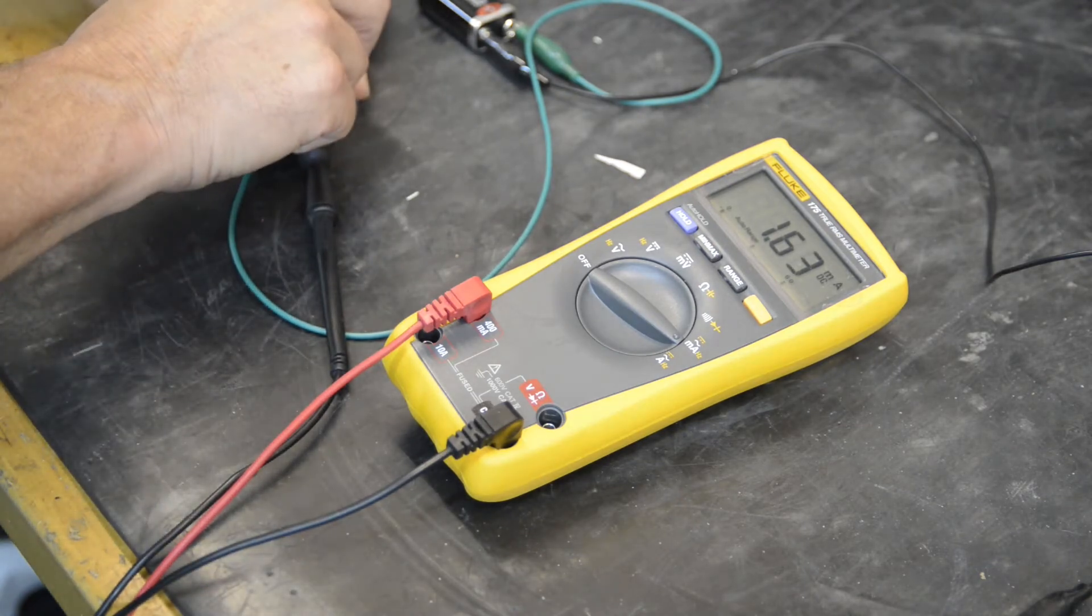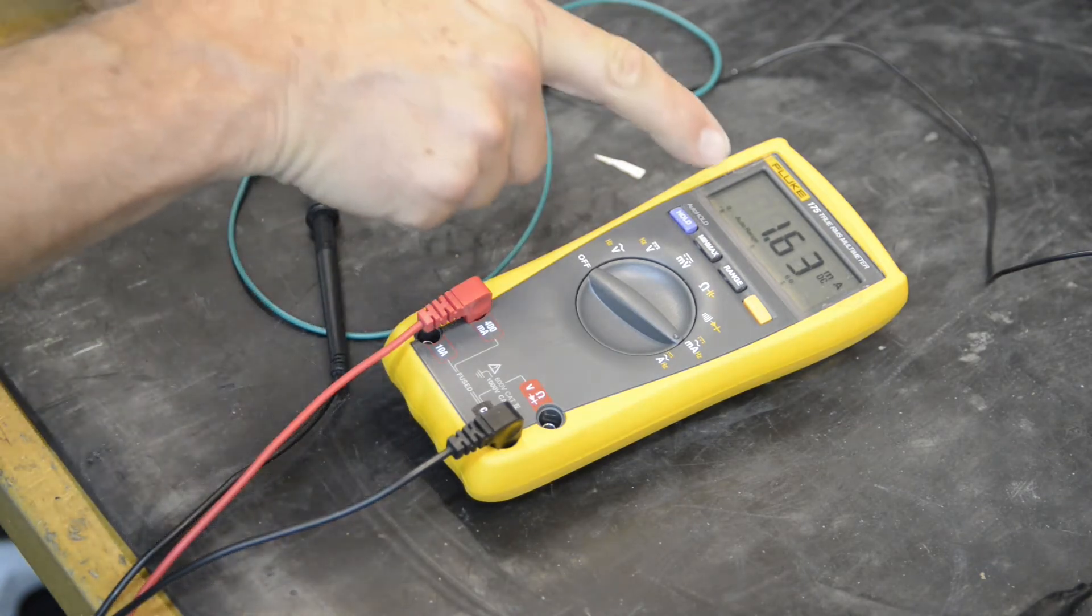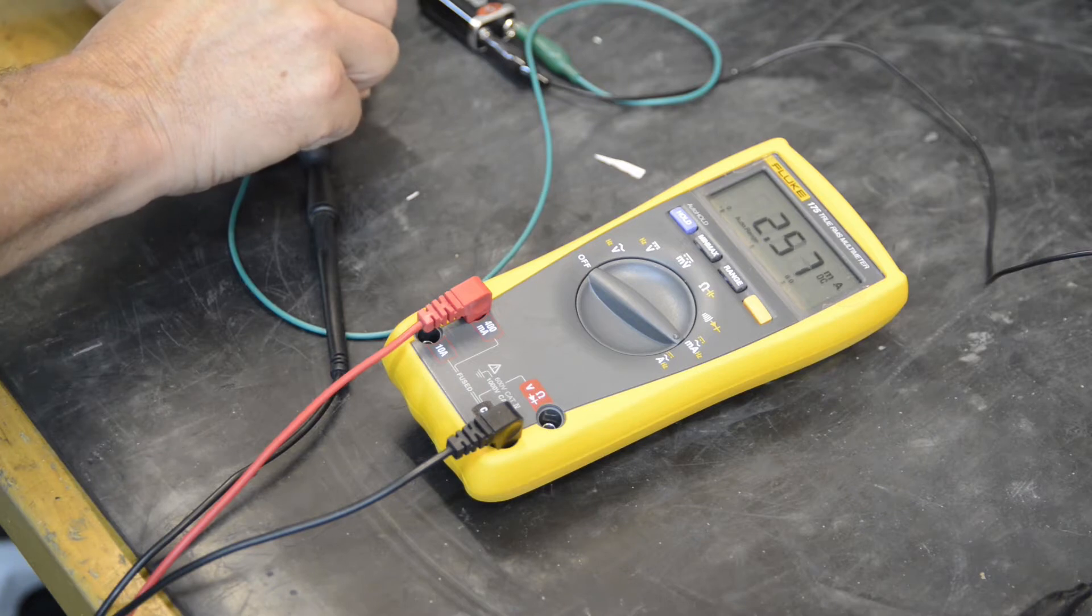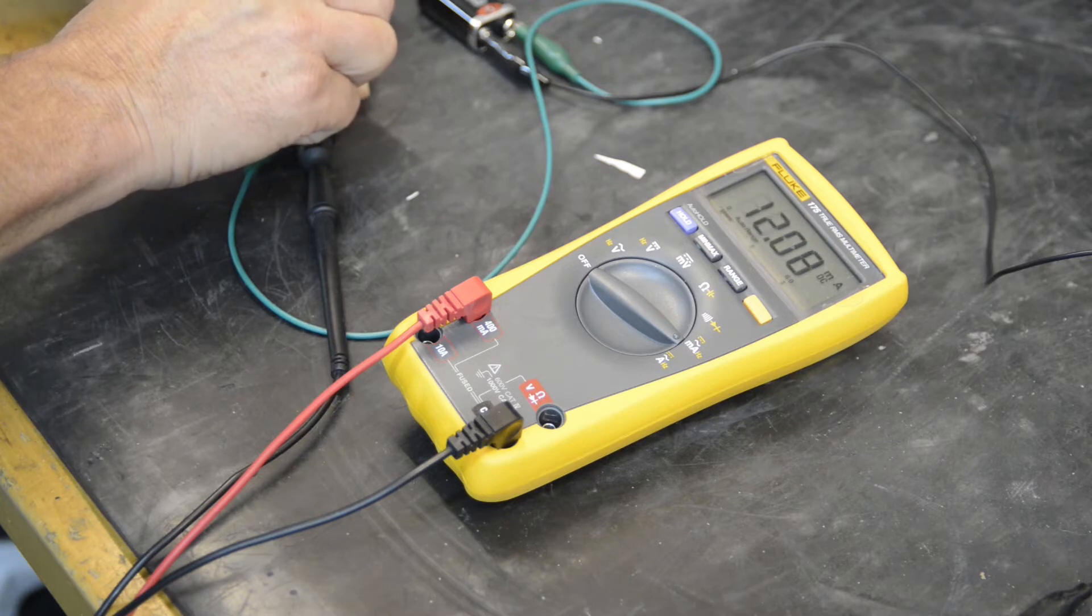And when I turn the dial, right now it's reading 1.6 milliamps, so when I turn it up, you can see the milliamp reading start to go up. So this would easily get me the 4 to 20 that I was expecting from the sensor.